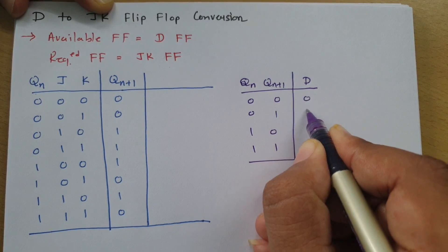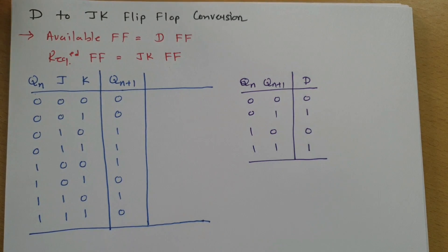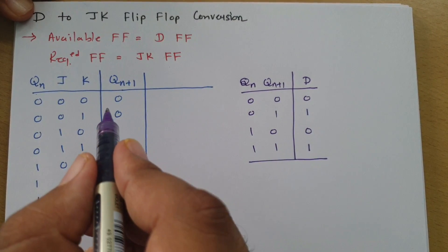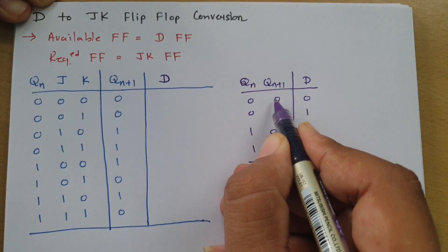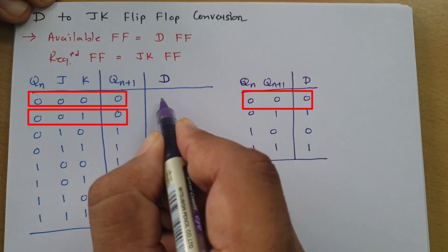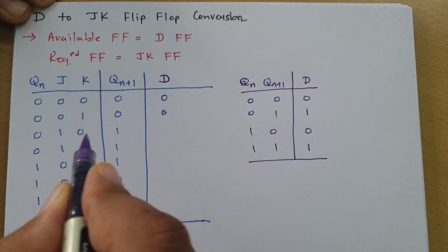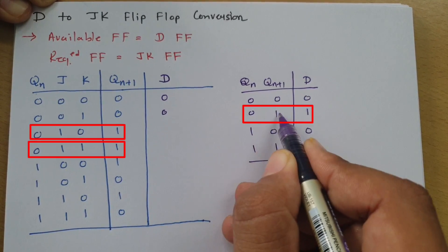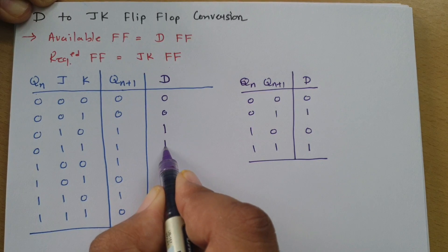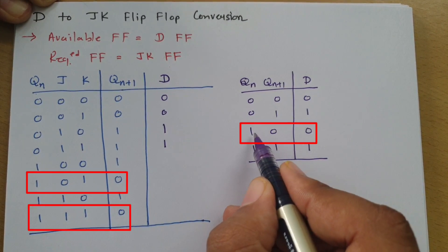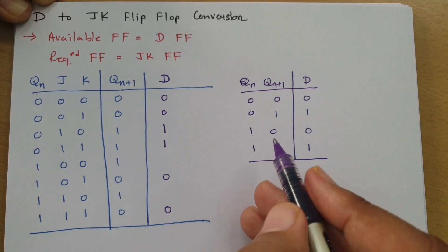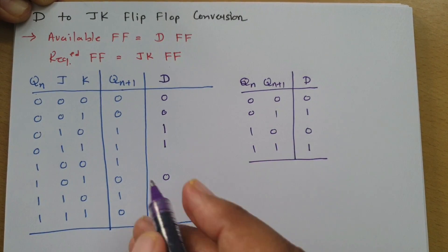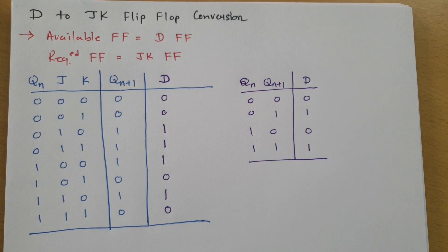So the D values are 0, 1, 0, and 1. Now I need to place this excitation table into the characteristic table. When Qn and Qn+1 are both 0, D is 0. When Qn is 0 and Qn+1 is 1, D is 1. When Qn is 1 and Qn+1 is 0, D is 0. This is how we place the excitation table values.